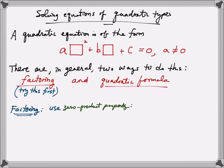One should always try factoring first. When we factor a quadratic equation, we use the zero product property, which says: if A times B equals zero, then either A is equal to zero or B is equal to zero. There's no other way to form zero by taking a product of non-zero terms. For example, if 2 times something equals zero, that something must equal zero.